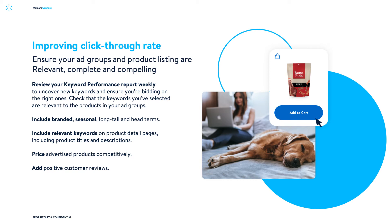Also ensure your keywords are relevant to all products in your ad group. Number three: include relevant keywords on your product detail page, including product titles and descriptions. And number four: ensure your product is priced competitively.